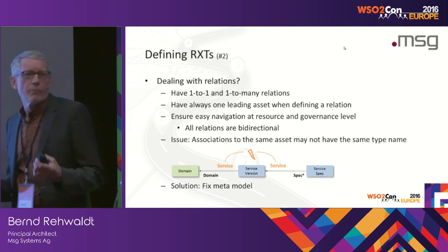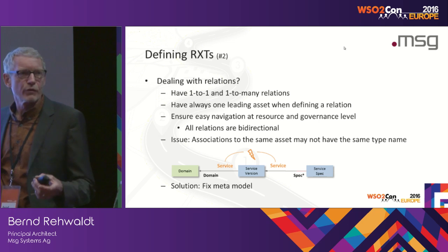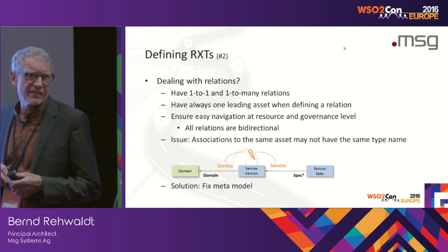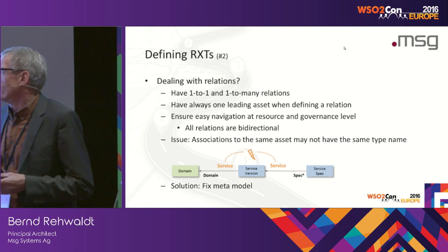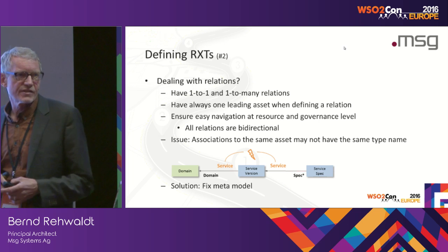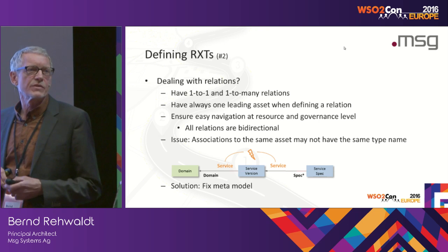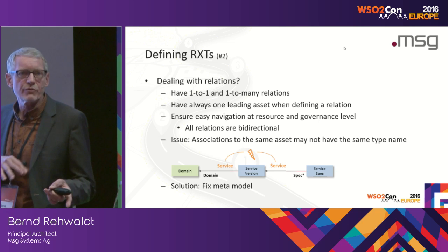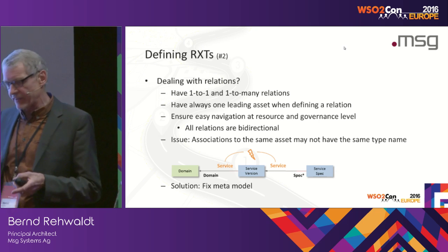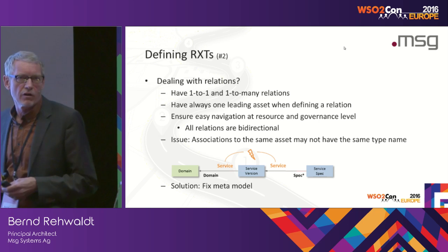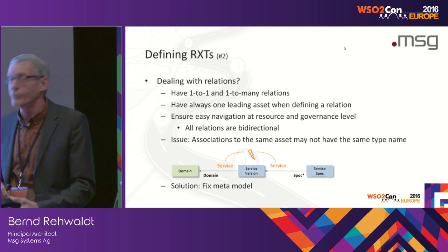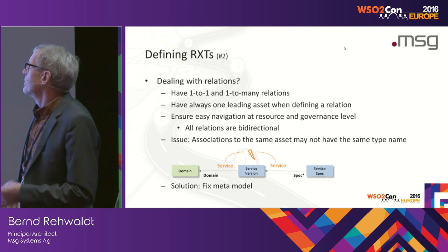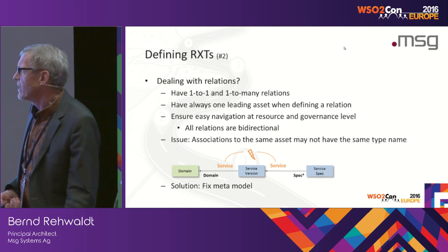After those issues and a few more, we were able to define our metamodel. It worked fine. We have about 13 assets, different asset types, with about 30 different relations. There are those assets which have attributes, and also assets that don't have attributes — like the WSDL, XML Schema definition, or some documentation. And then we were quite fine with that.